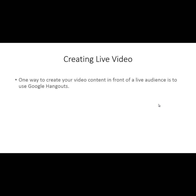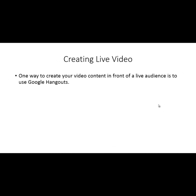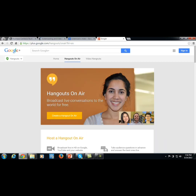Welcome back to Alternative Authority Content. In this video, we are going to be discussing creating live video as your authoritative content. This is another way of using the video medium to communicate valuable information to your subscribers, followers, or anyone else who will eventually become your buyer. One of the best ways to create live video in front of a live audience is to use Google Hangouts On Air.